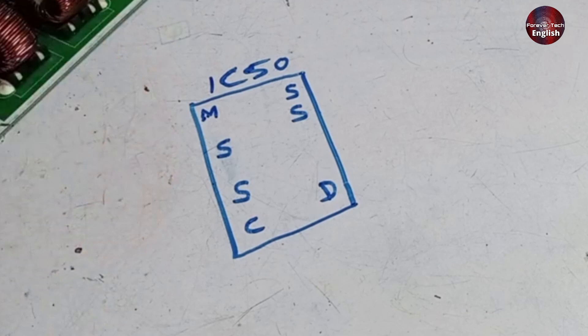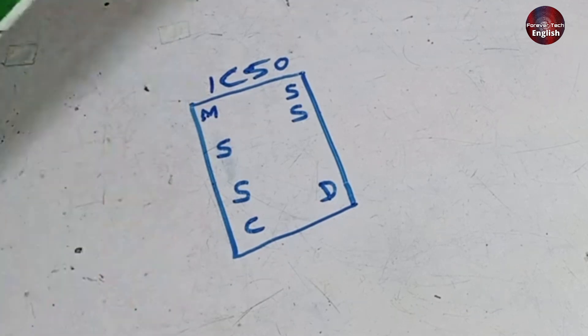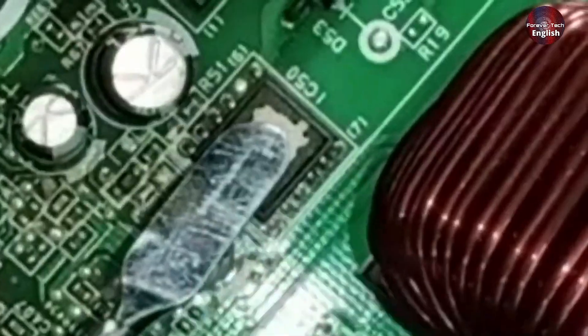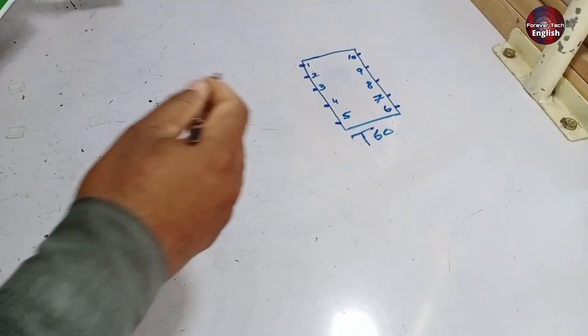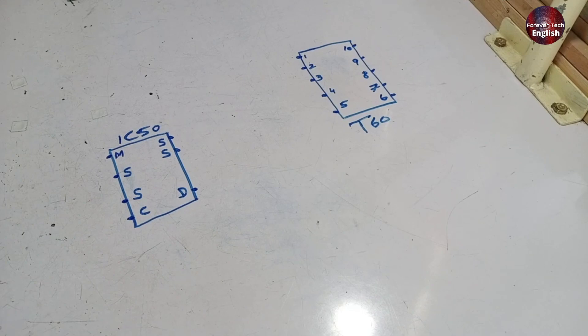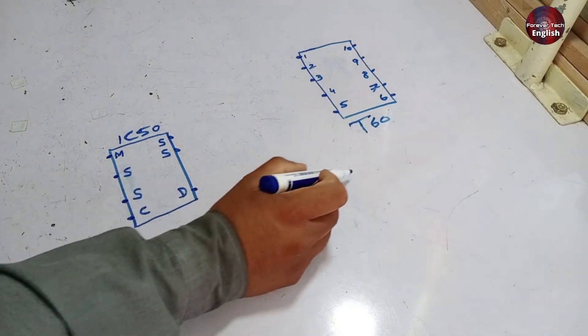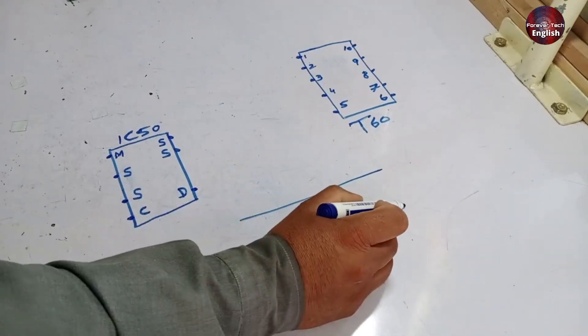I have drawn an IC, which is IC number 50. This is the switching IC installed here, and its number is IC 50. Along with it is a chopper, labeled as T60. I have drawn both of these. Now I will show you another technique, how to identify and read the schematic diagram.